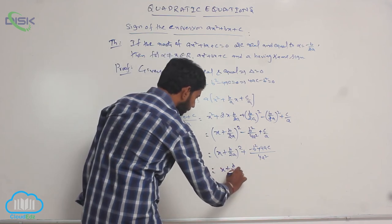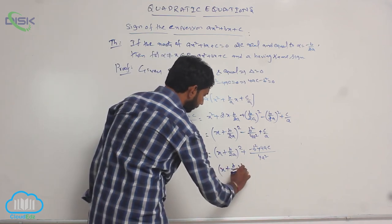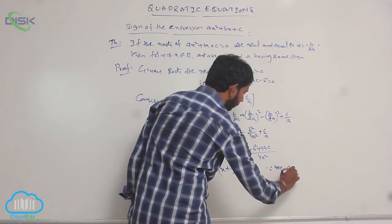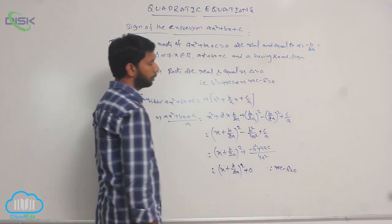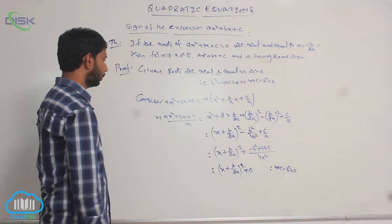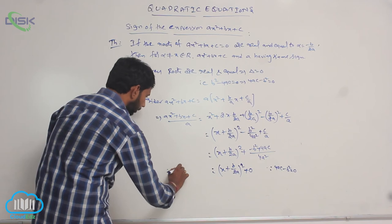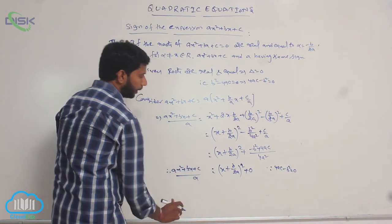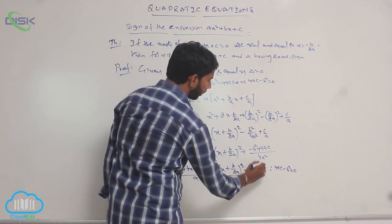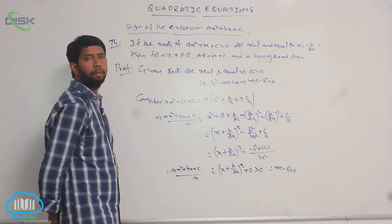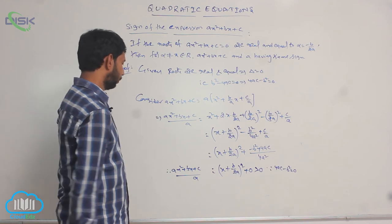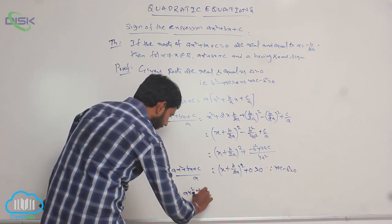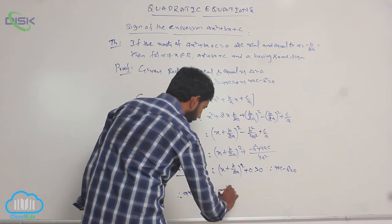Therefore, this equals (x + b/2a)² + 0, which is always greater than 0, since 4ac - b² = 0. Therefore, ax² + bx + c divided by a equals (x + b/2a)², which is always greater than 0. Therefore, ax² + bx + c and 'a' have the same sign.